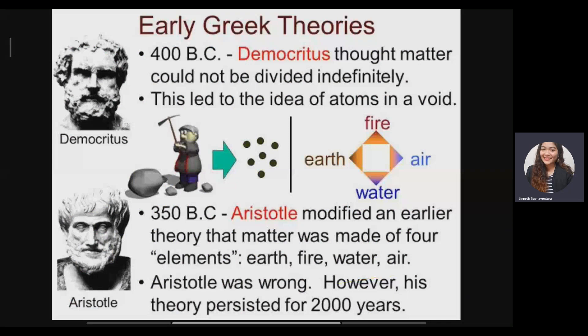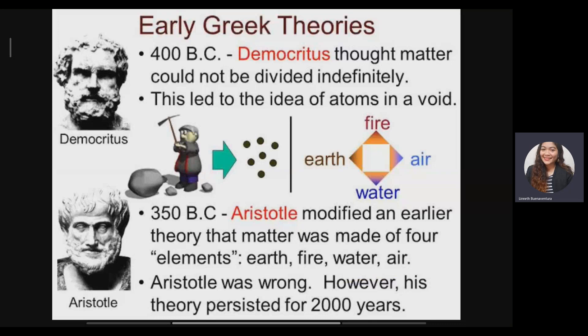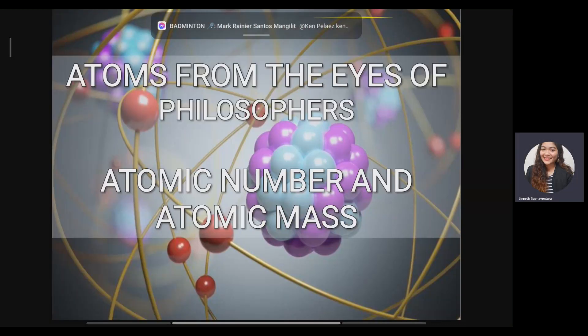This is Week Number Two. First, we're going to discuss the early philosophers that tried to define what an atom is. We have Democritus and Aristotle. Around 400 BC, Democritus introduced the idea of an atom. He thought that matter cannot be divided indefinitely, and this led to the idea of atoms in a void. According to him, all matter on Earth has a point at which we cannot divide it further.